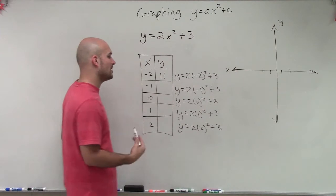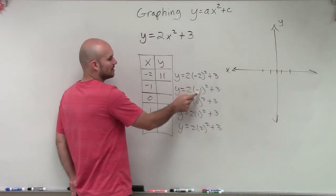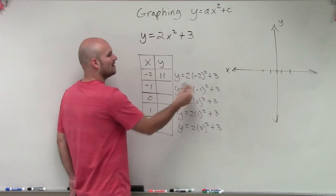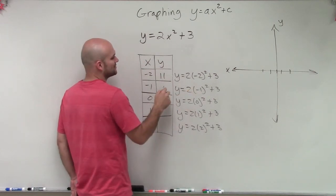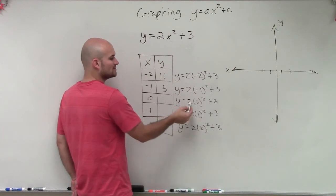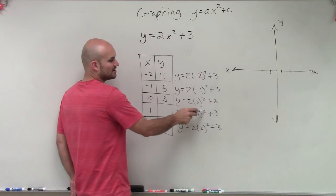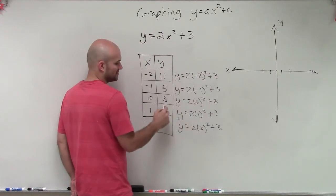Remember, make sure you follow the correct operation. Negative 1 squared is 1. 1 times 2 is 2. 2 plus 3 is 5. 0 squared is 0. 0 times 2 is 0. 0 plus 3 is 3. Then we have 1 squared is 1. 1 times 2 is 2. 2 plus 3 is 5.